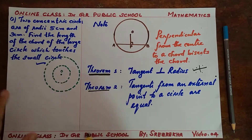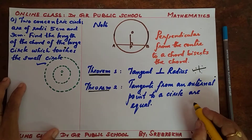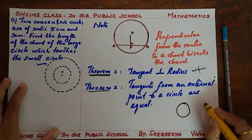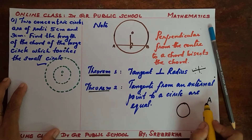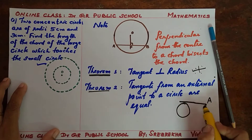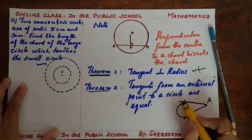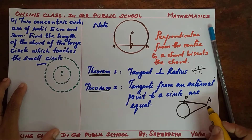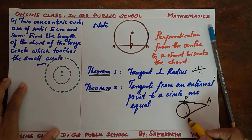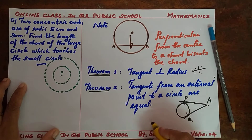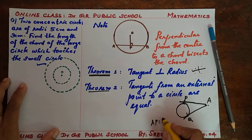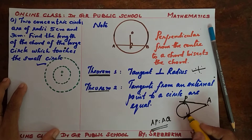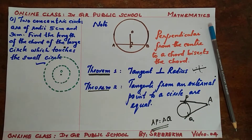Theorem 2 states that the tangents from an external point to a circle are equal. If you consider a circle and an external point A, the tangents drawn from this external point to the circle — from A to the point of contact P and from A to the point of contact Q — both lengths will be equal, that is AP equals AQ. These are the two theorems.